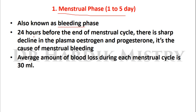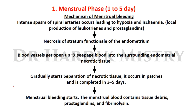24 hours before the end of the menstrual cycle, there is a sharp decline in the plasma levels of estrogen and progesterone, which is the cause behind menstrual bleeding. The average amount of blood loss during each menstrual cycle is 30 ml, but it may vary. The mechanism of menstrual bleeding occurs from day 1 to 5, the day bleeding starts being counted as day 1.